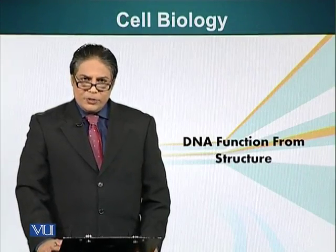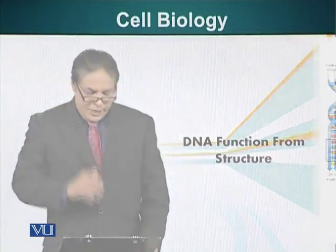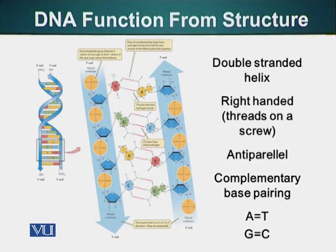Now let's look at the DNA structure in more detail. We have already seen similar images. DNA is a double helix. The backbone is made up of phosphate and the pentose sugar. I will use a highlighter to point out different structures. So this backbone is made up of pentose sugar and phosphate.